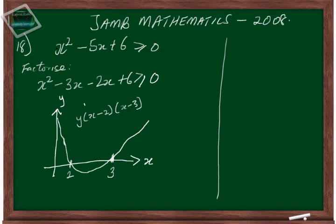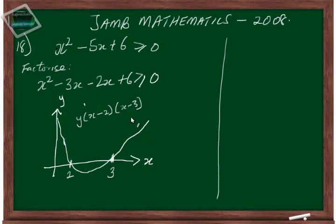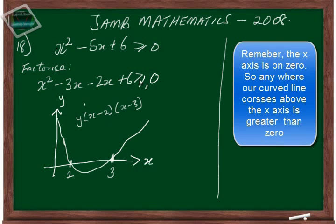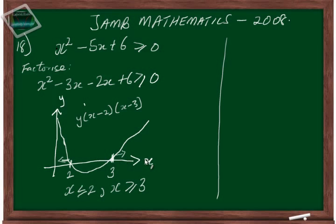Moving to the last step — step three — we now determine the interval on the graph that satisfies the inequality. At what point is this inequality greater than or equal to zero? It is greater than or equal to zero from the arms of the U-shape upwards, so we place arrows going outward. It satisfies the inequality where x is less than or equal to two, and where x is greater than or equal to three.